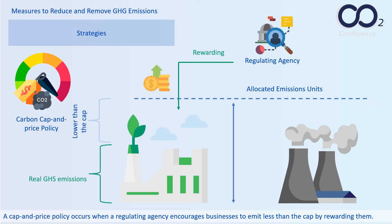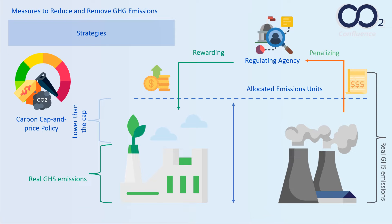A cap-and-price policy occurs when a regulating agency encourages businesses to emit less than the cap by rewarding them and penalizing them for emitting more, effectively discouraging them from generating emissions.